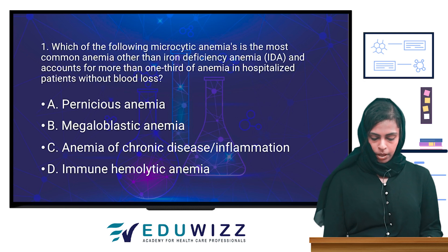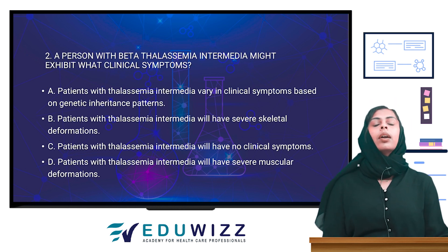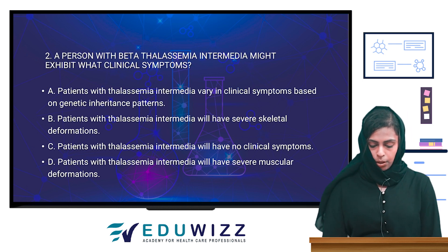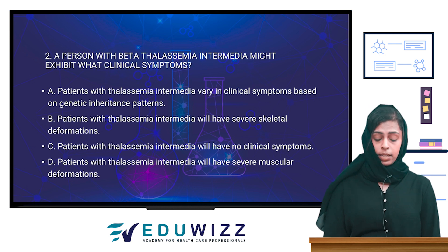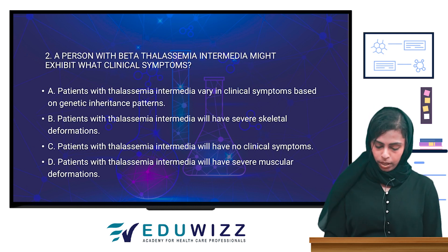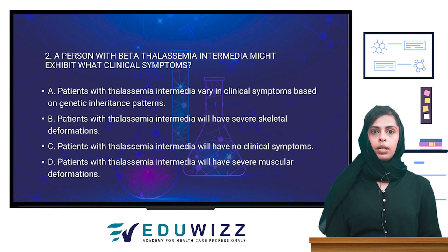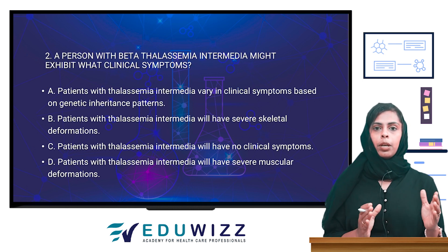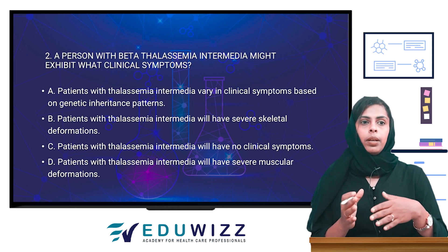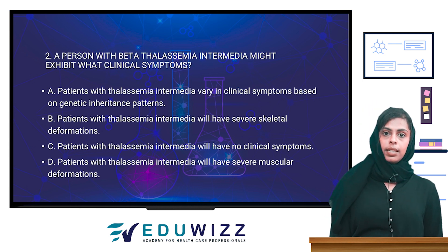The next question: a person with beta thalassemia intermedia — what clinical symptoms can they expect? The options are: severe skeletal deformation, no clinical symptoms, severe muscular deformation, or variable clinical symptoms based on genetic inheritance pattern. The condition is variable in symptoms depending on the genetic character — whether minor or major. So the answer is: patients with thalassemia intermedia vary in clinical symptoms based on genetic inheritance pattern.